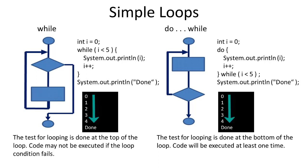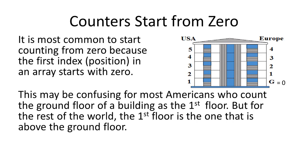It is very common in programming to start counting from 0. If you are new to programming, this is something to get used to. It is most common to start counting from 0 because the first index in an array starts with 0. This may be confusing for most Americans who count the ground floor of a building as the first floor, but for the rest of the world, the first floor is the one above the ground floor.